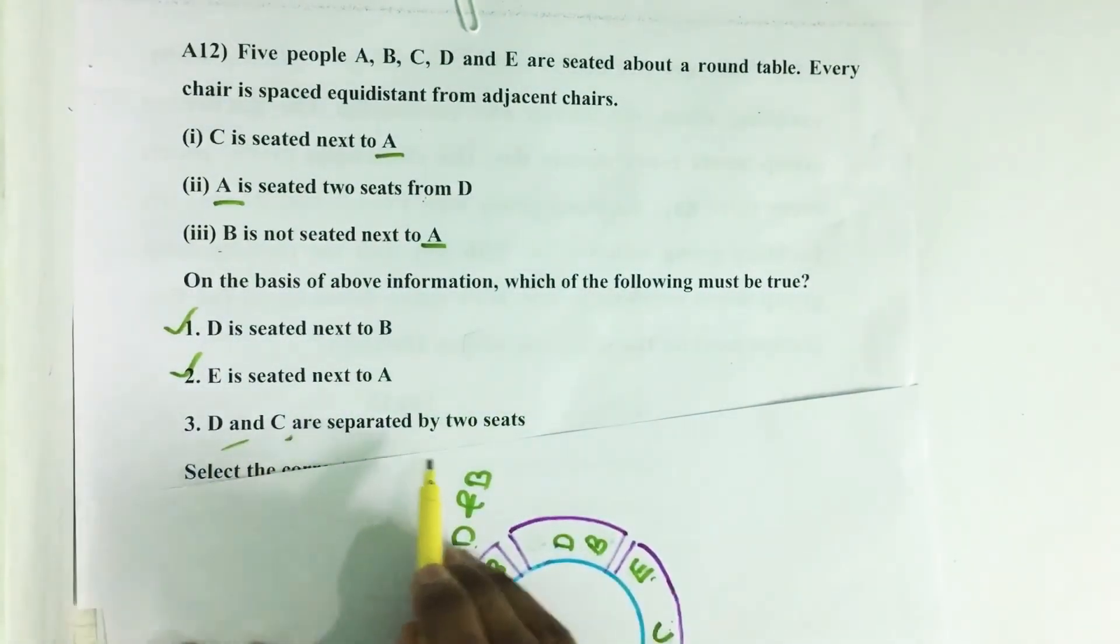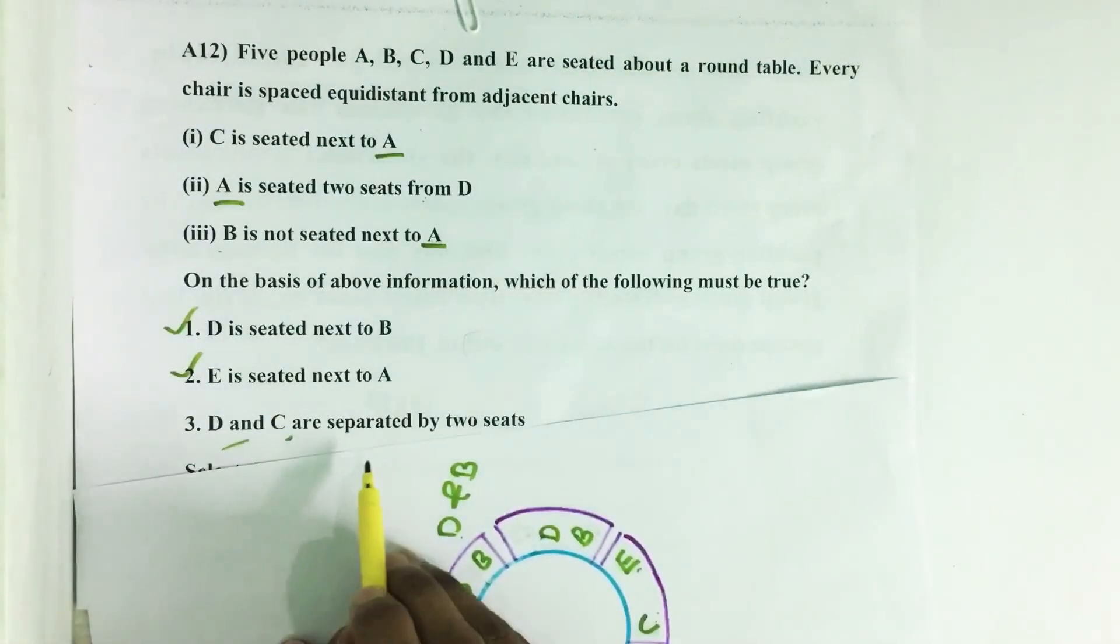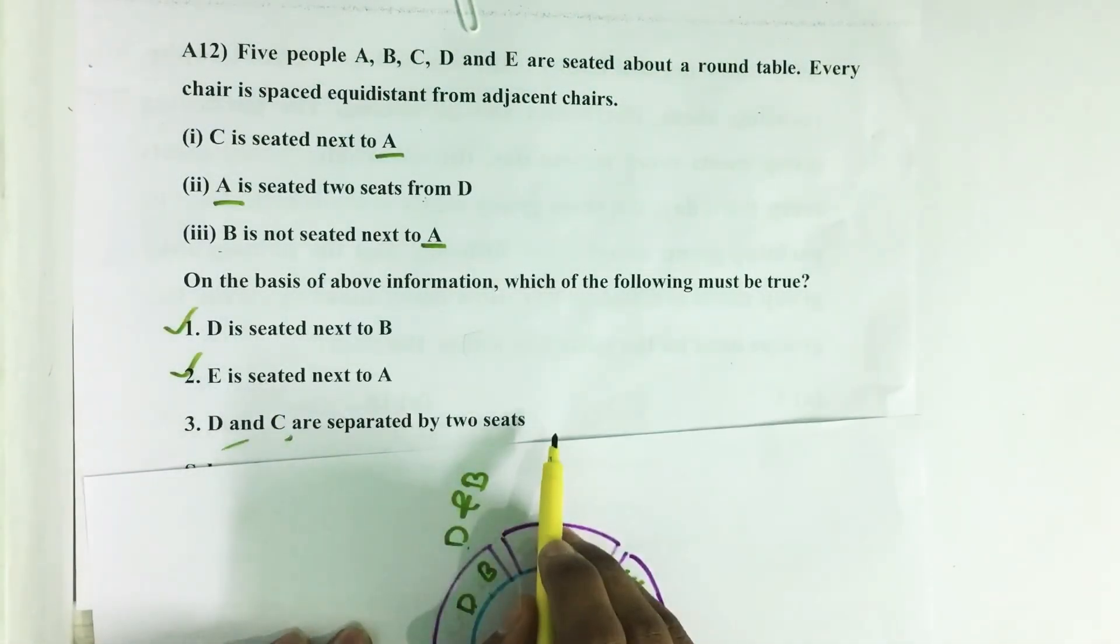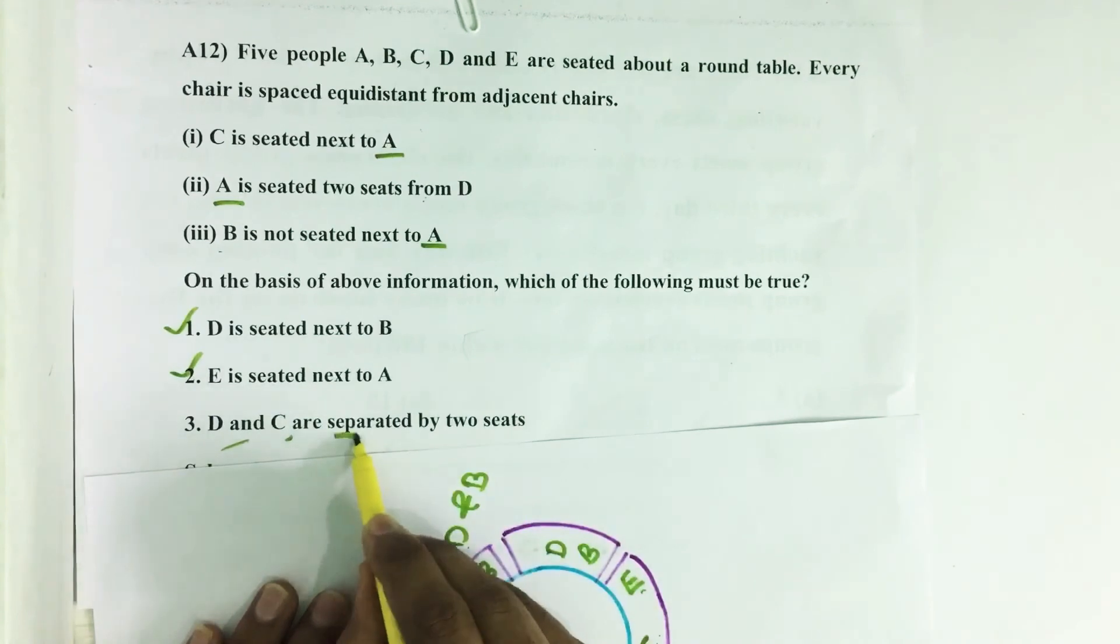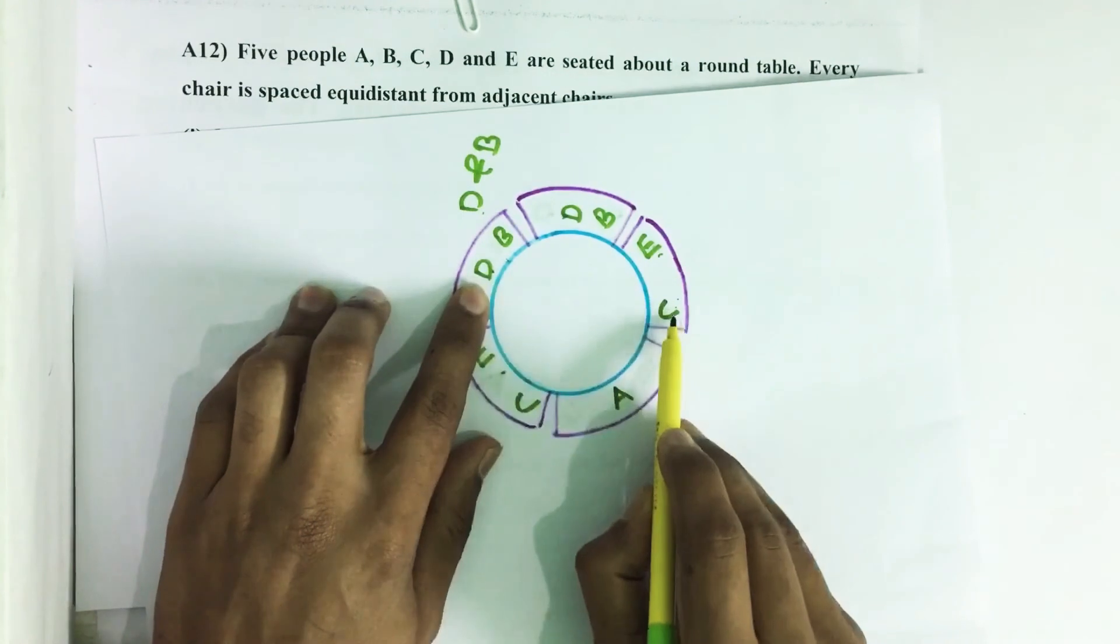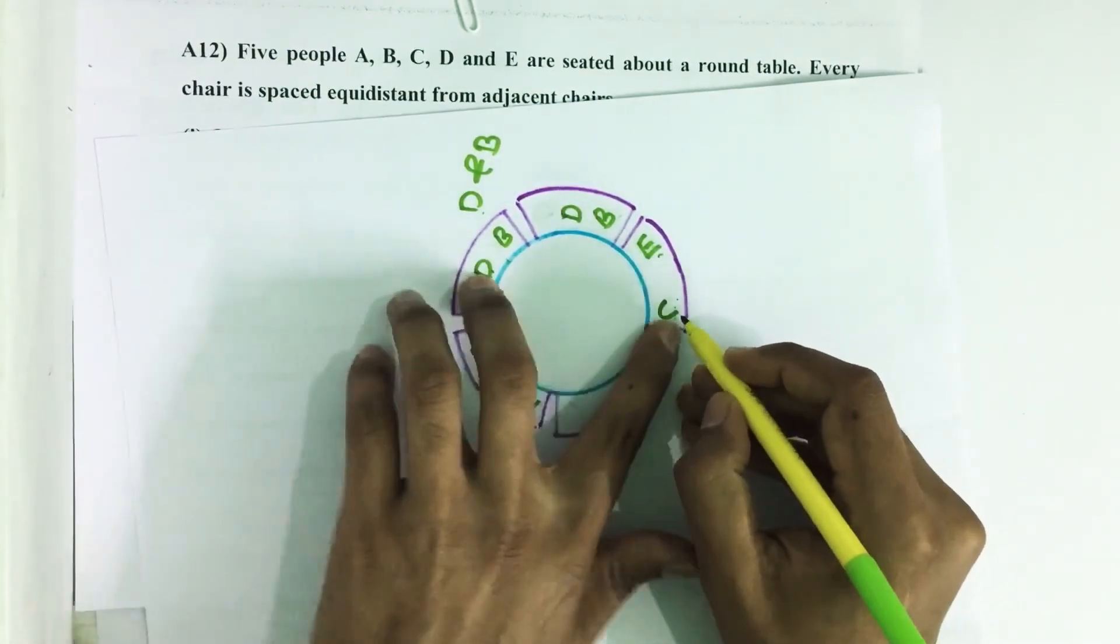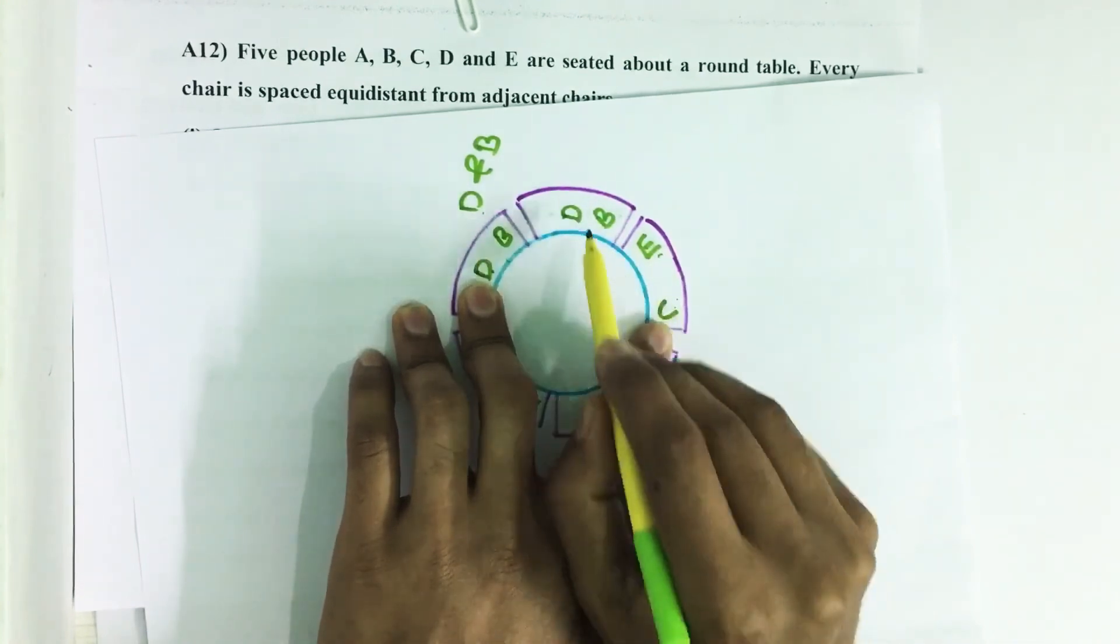Then D and C are separated by two seats. Suppose D and C are separated by two seats. Suppose consider here D and C. Suppose C is here and D is here. Then D and C is here.